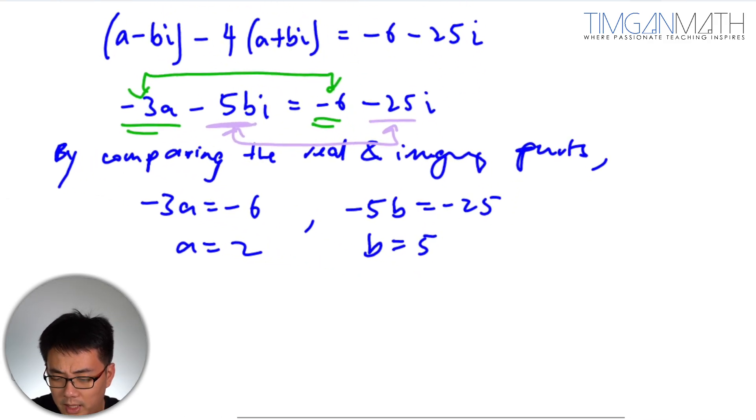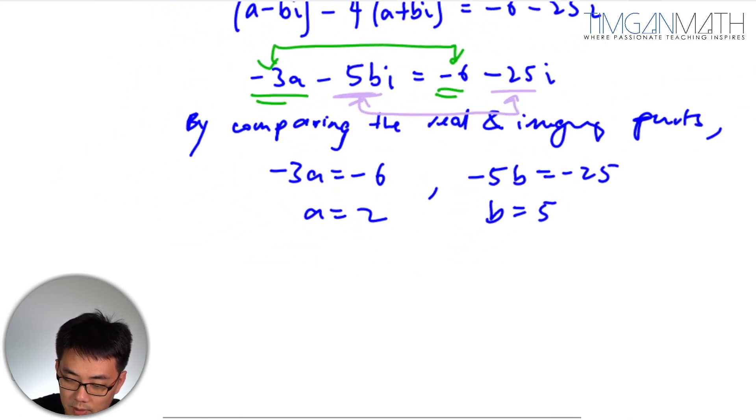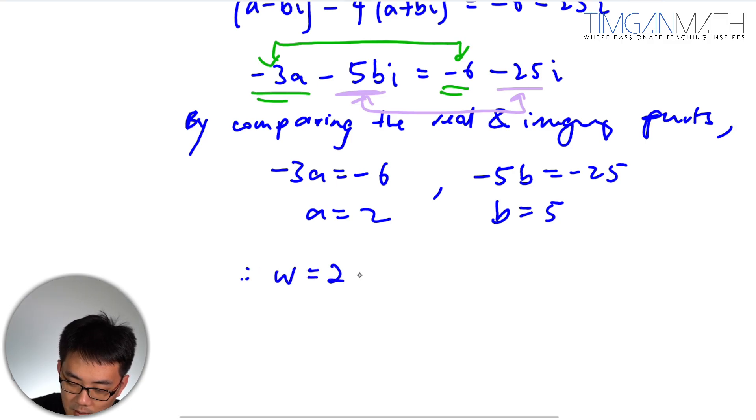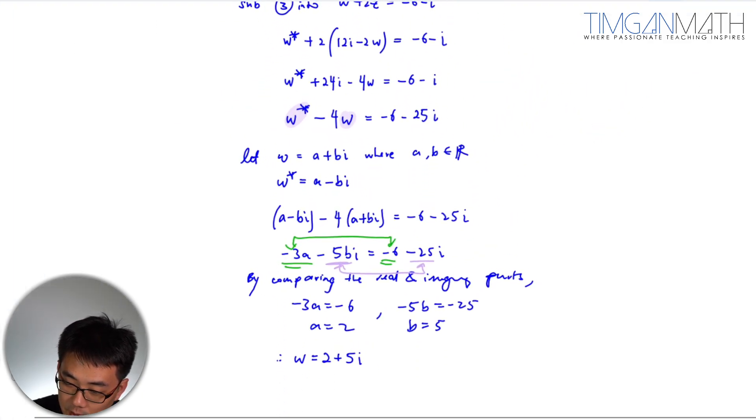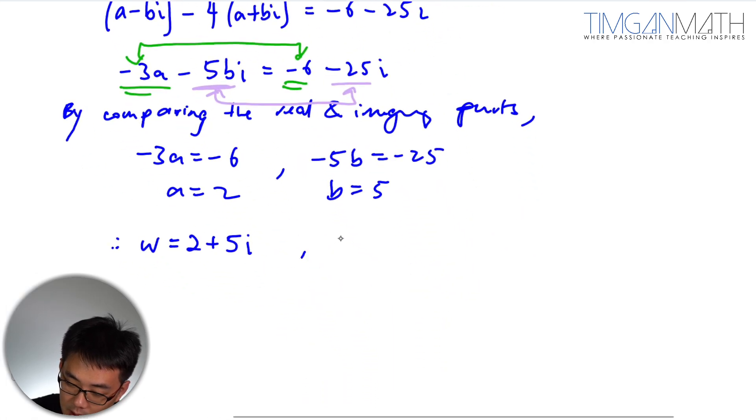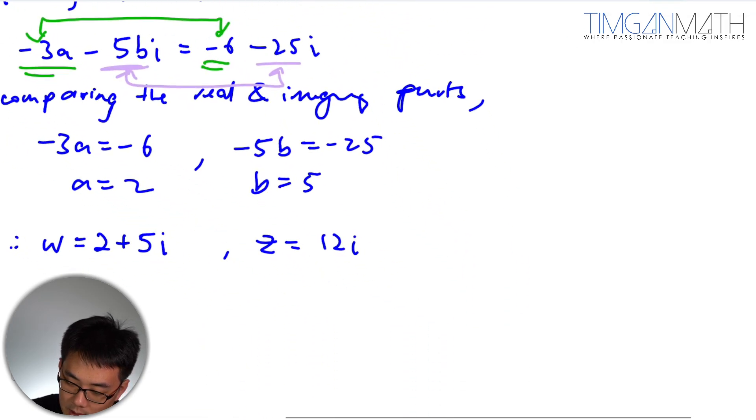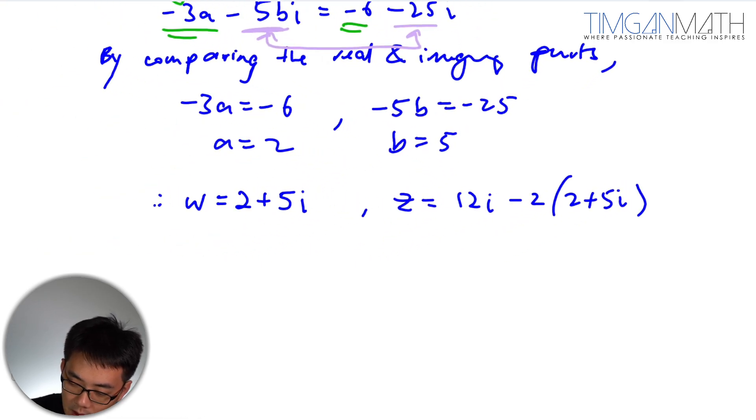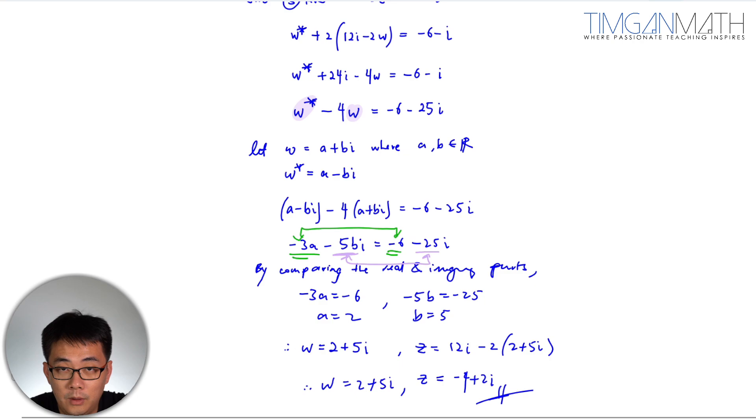So in this case here, hence W equals a plus bi, which is 2 plus 5i. Then for Z, of course we need to find Z. Z is 12i minus 2(2 plus 5i). So this will be minus 4 plus 2i.